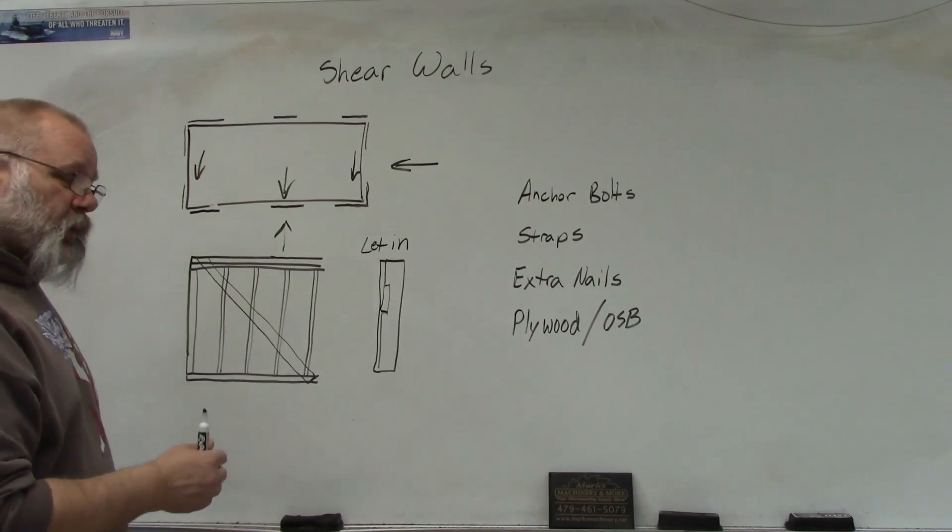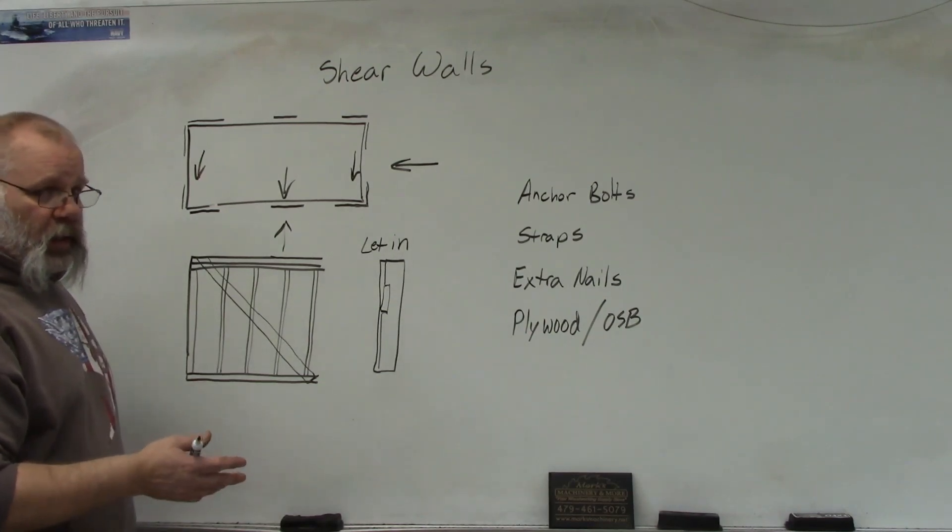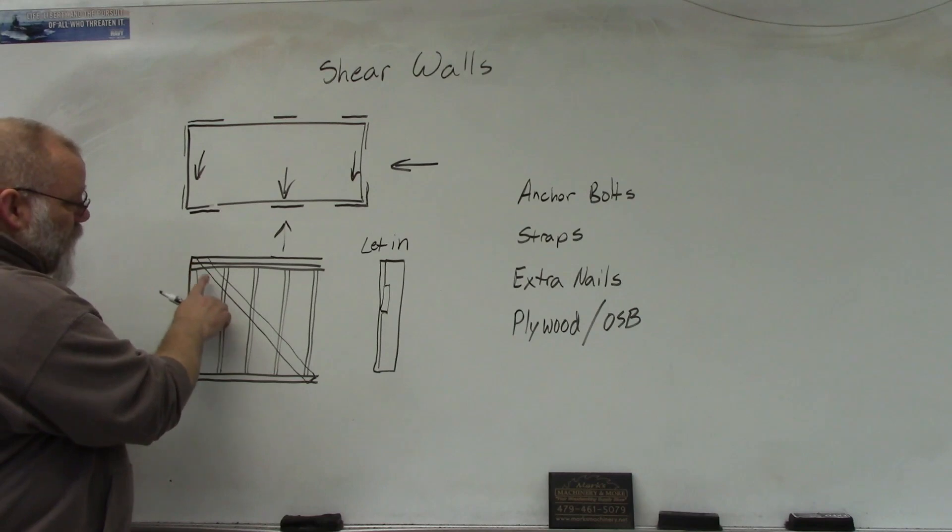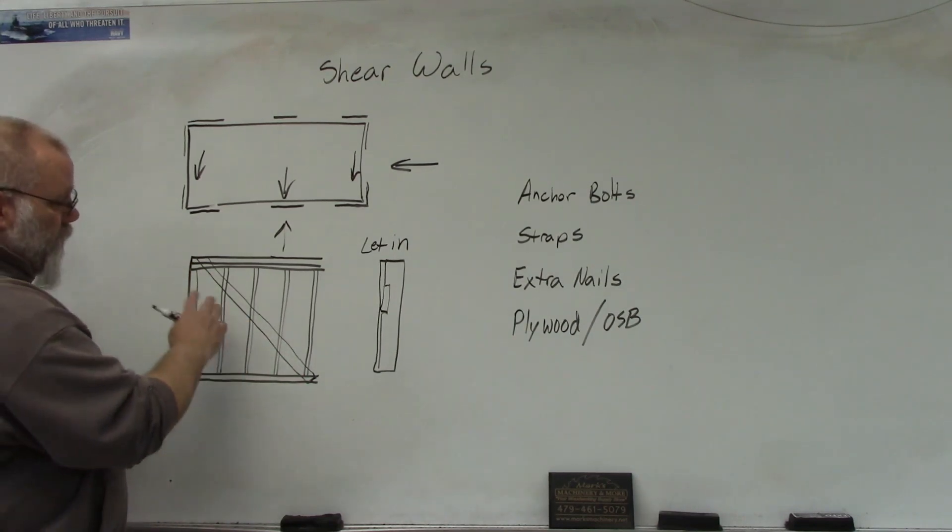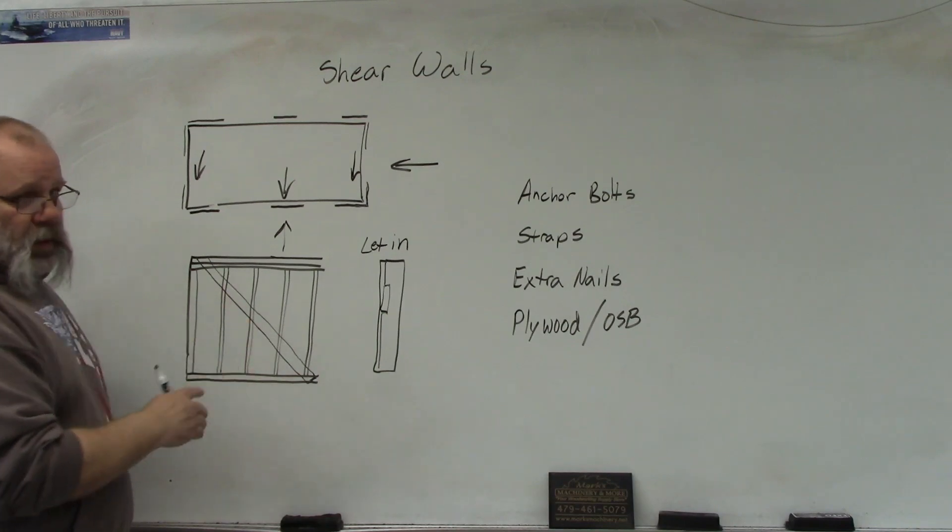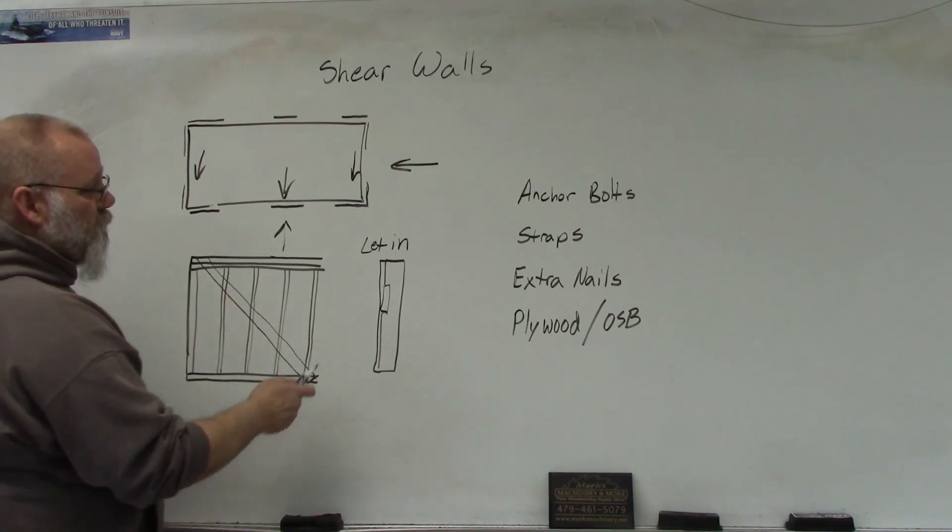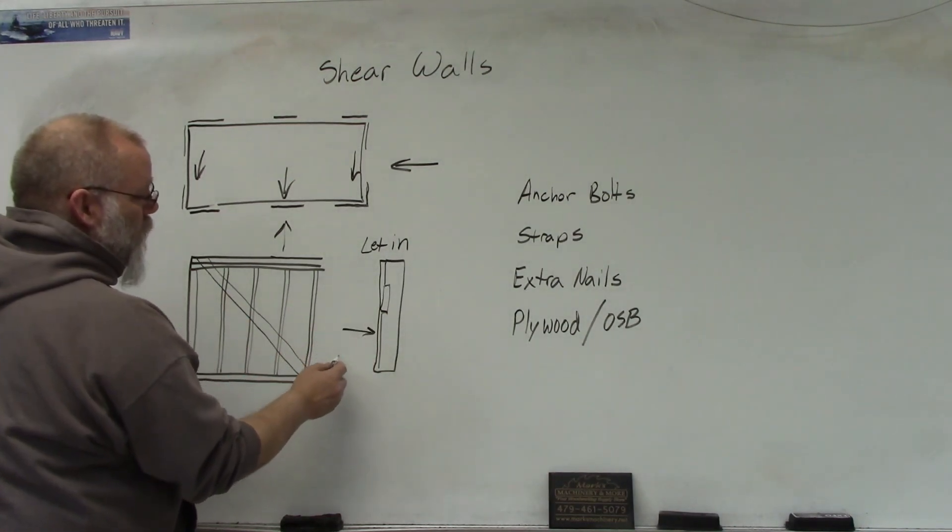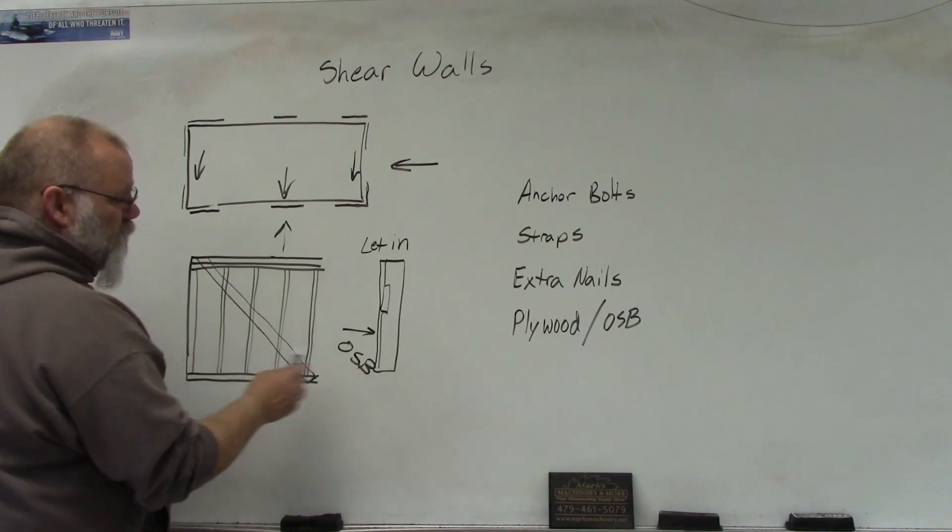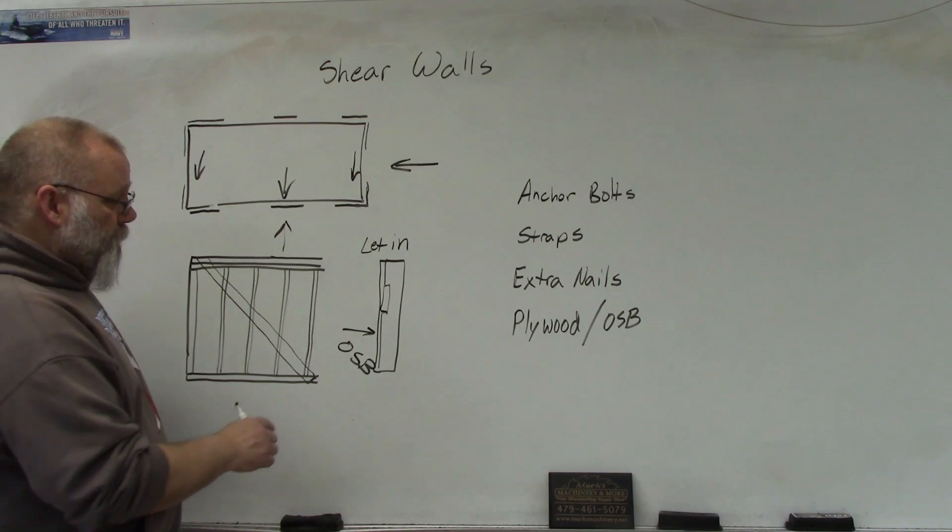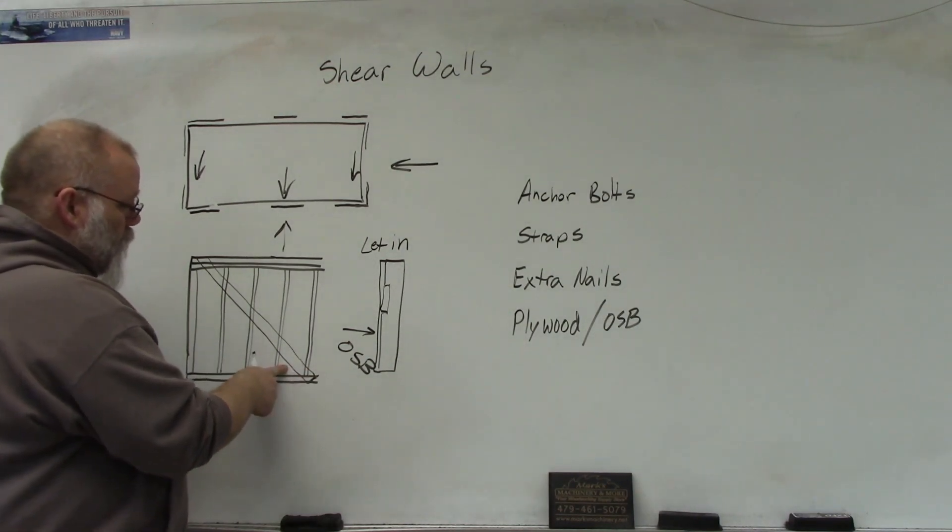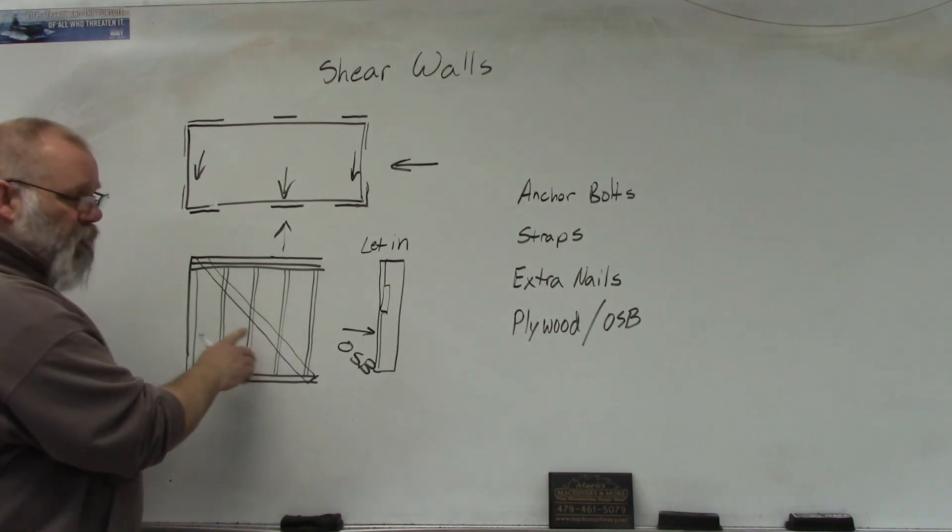After the 1980s, starting in the early 1980s, what they did instead of letting in a brace like this, which is kind of time consuming because you have to mark it, you have to cut it and it takes quite a bit of time. So what they did was they would sheet the corners of the house with OSB. That would then substitute for the let-in brace.